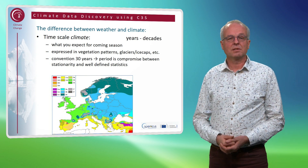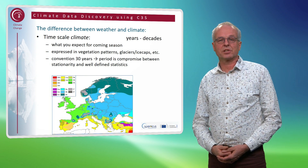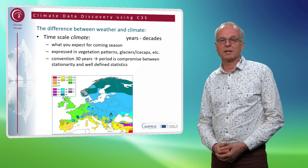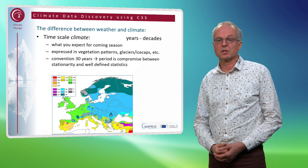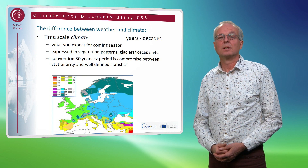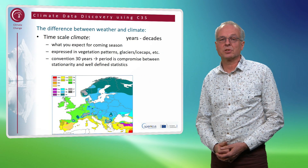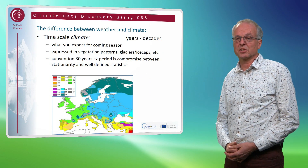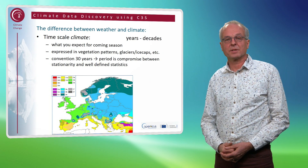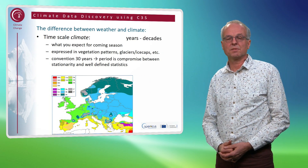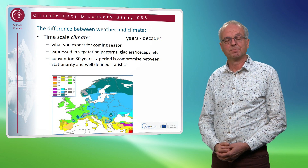By convention, climatologists use 30-year periods to define a climate in numbers. This is a kind of compromise between being long enough a period to obtain well-defined statistics, while at the same time being short enough to consider the climate to be constant or stationary.